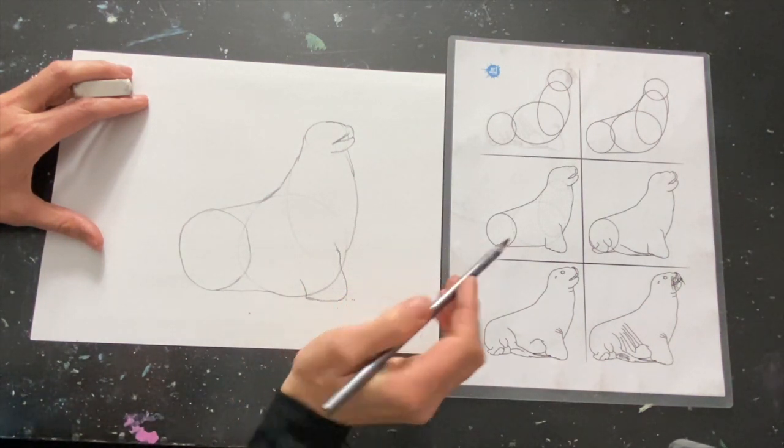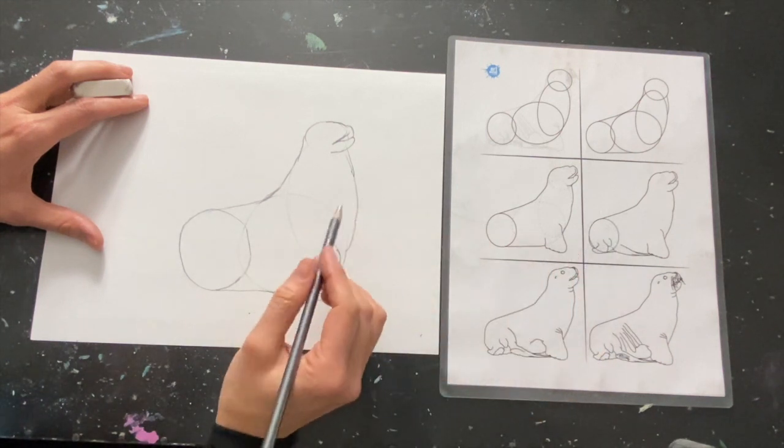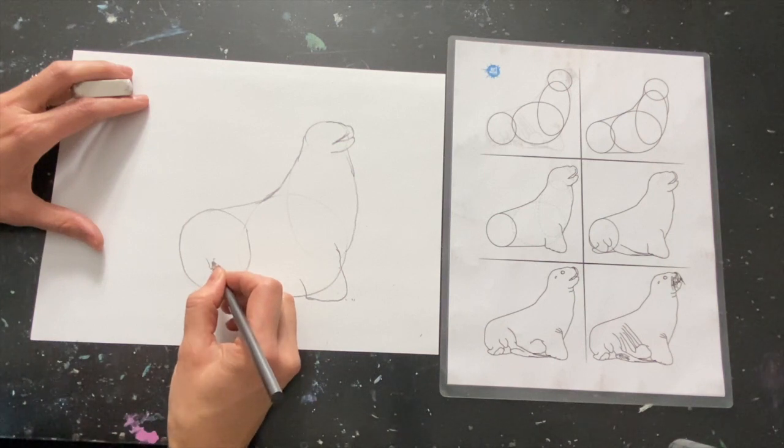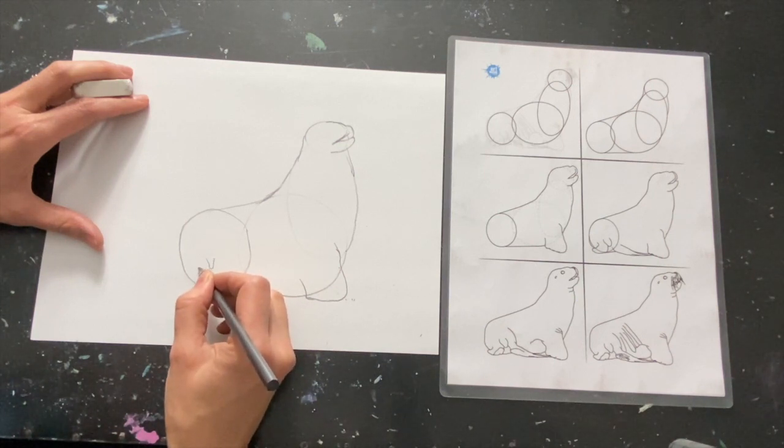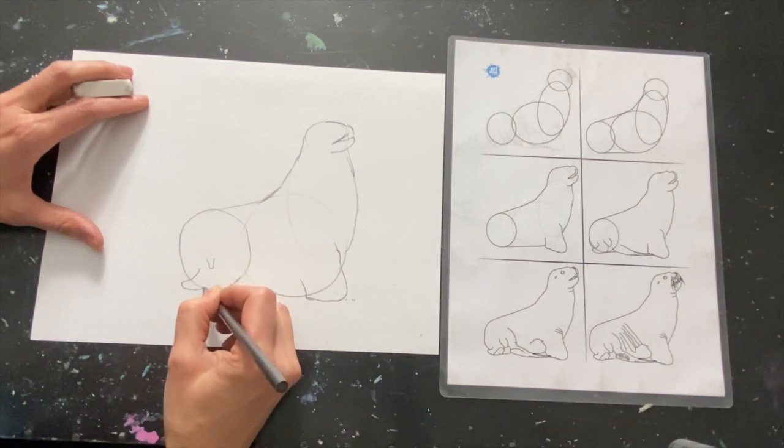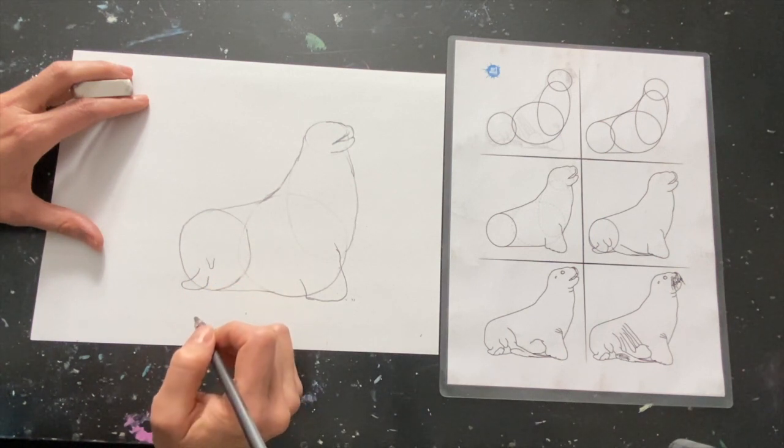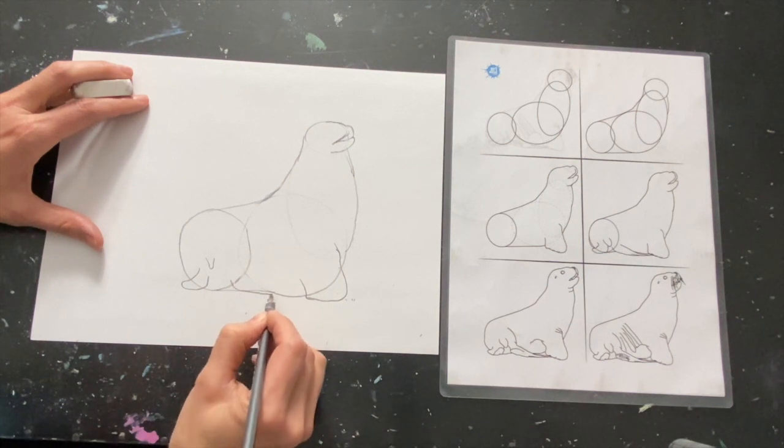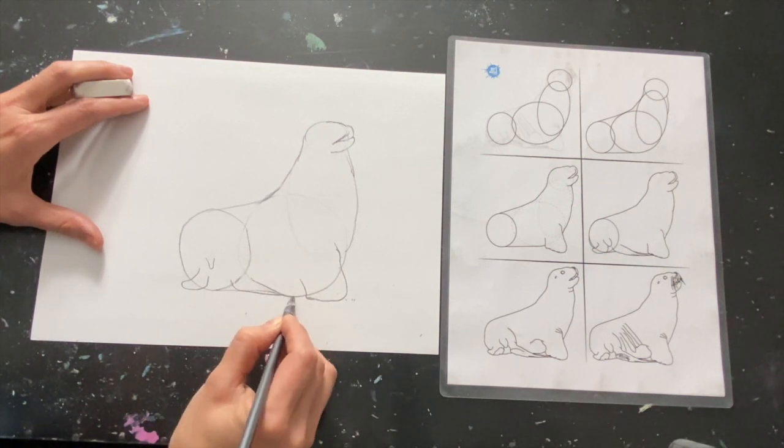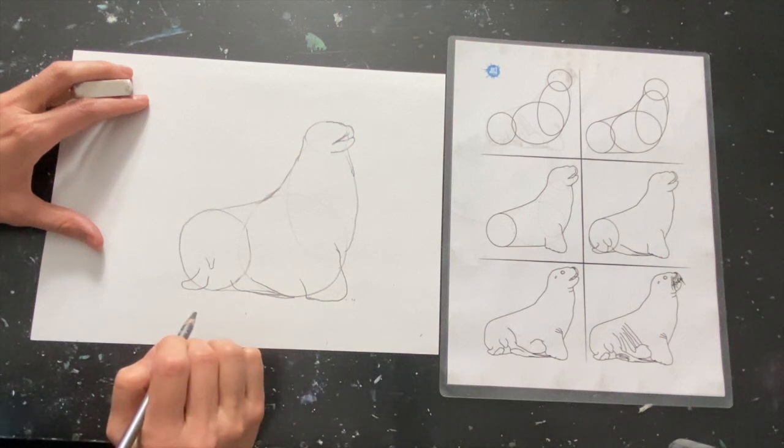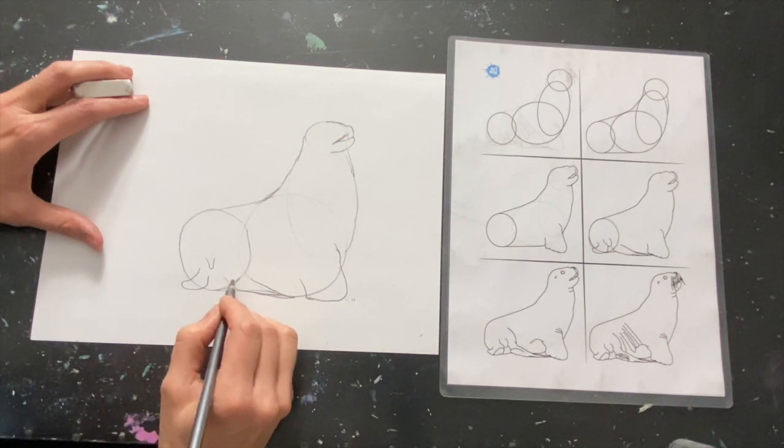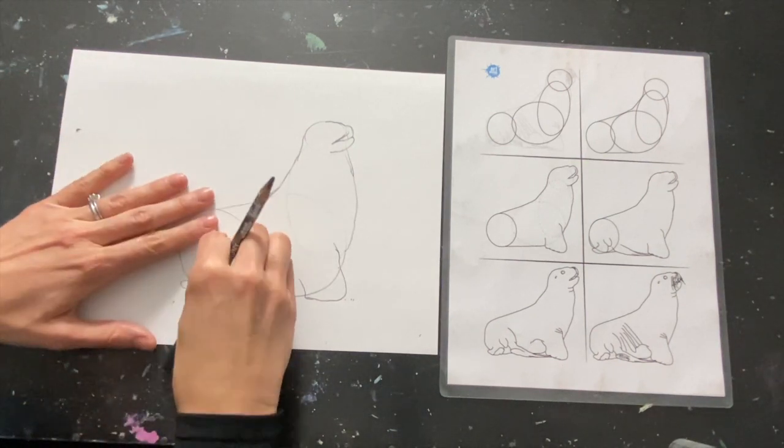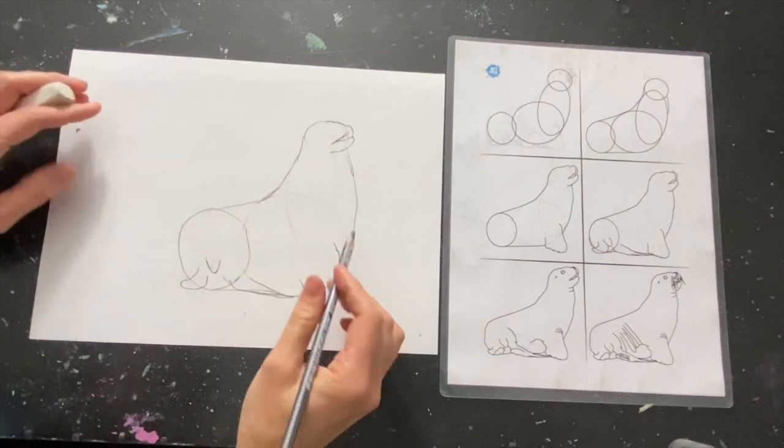Then we're going to move on to this step and we have a little tail coming from the back right here, and then a foot over in here, flipper I guess. We have another flipper that comes from the inside here, and from here my tail needs to be quite a bit bigger.